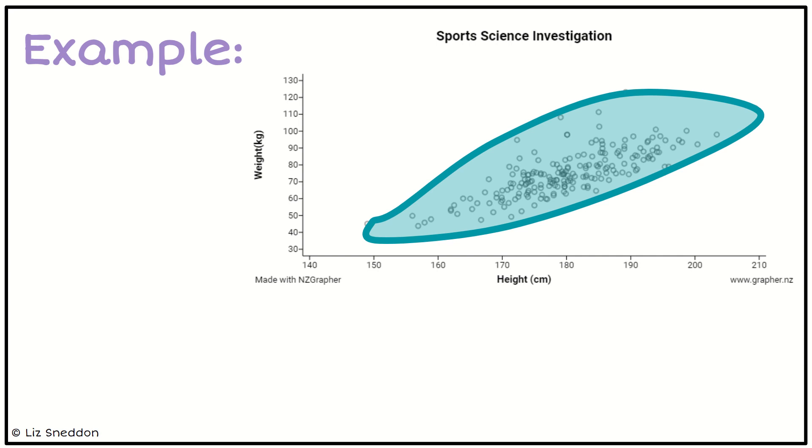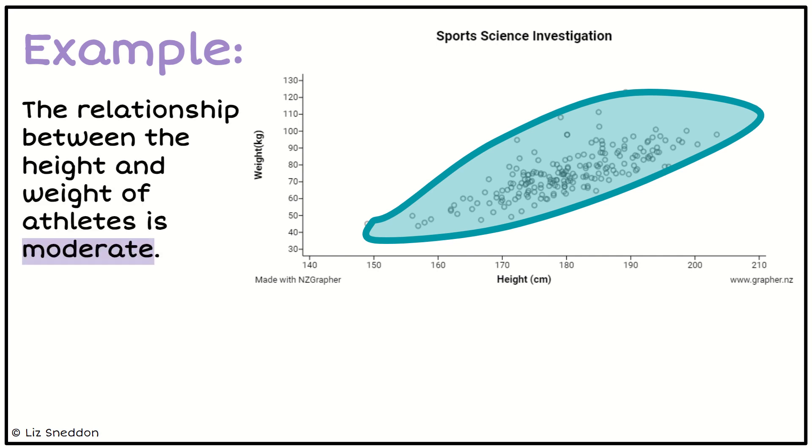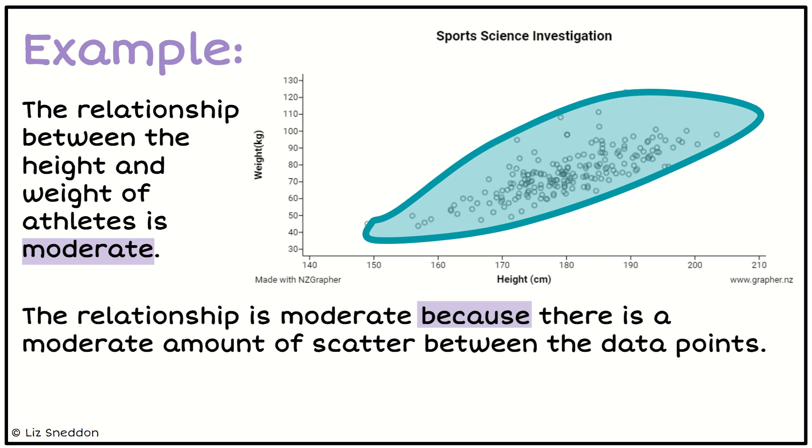So that's what I want to identify in a sentence. The relationship between the height and weight of our athletes is moderate, then I need to justify that. So it's moderate because you've got a moderate amount of scatter between those data points.